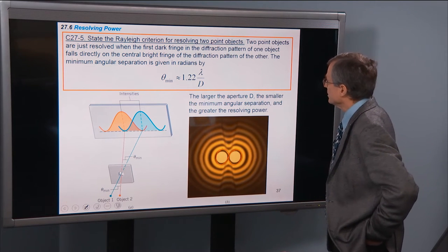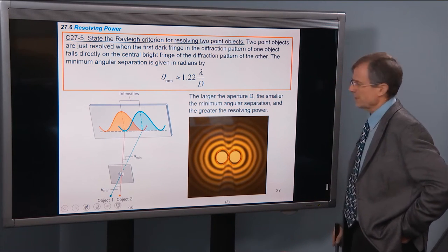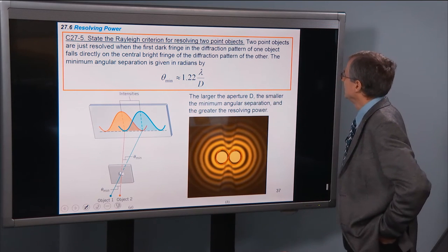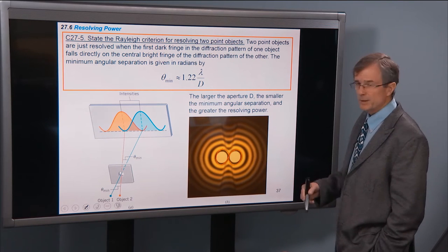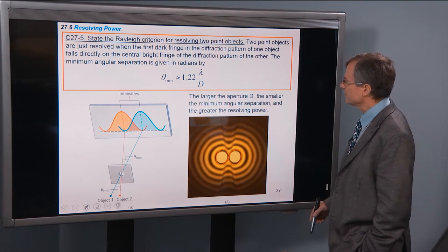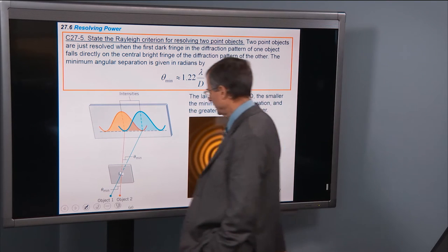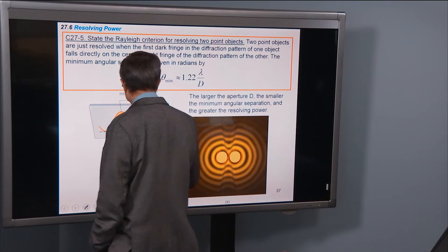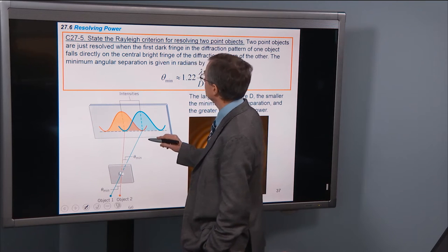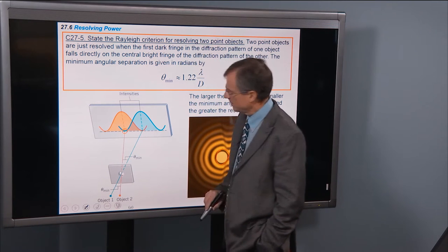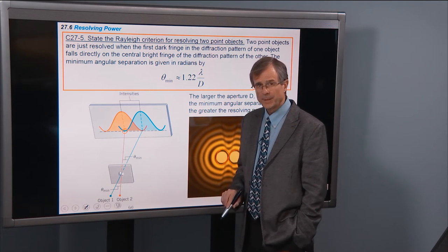The Rayleigh criterion for resolving two-point objects, two stars in your telescope, or two distant points through your camera. Two-point objects are just barely resolved when the first dark fringe in the diffraction pattern of one object. So let's say we're looking at object one, which is blue here.